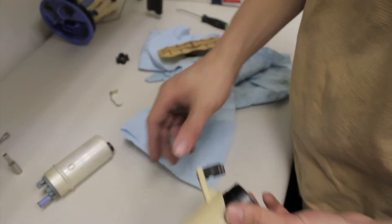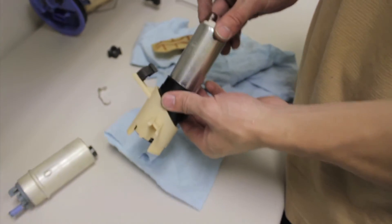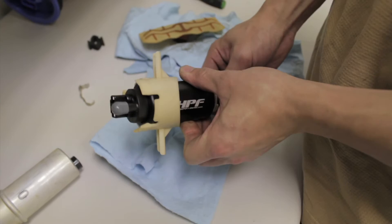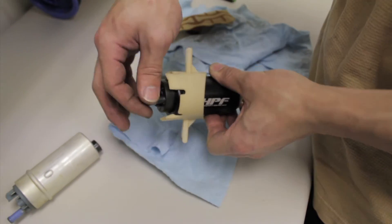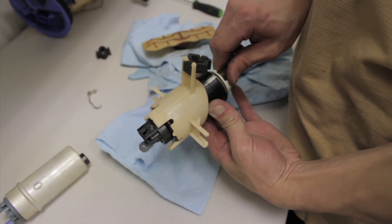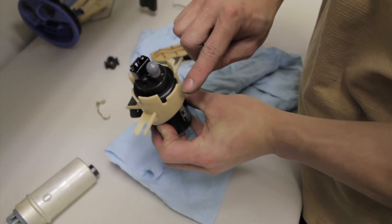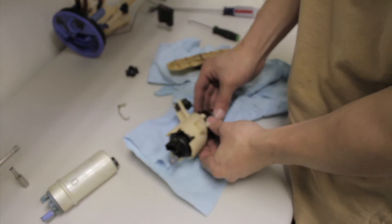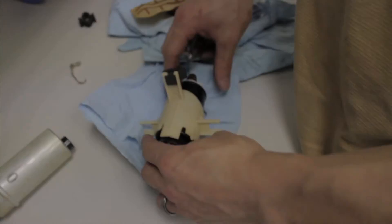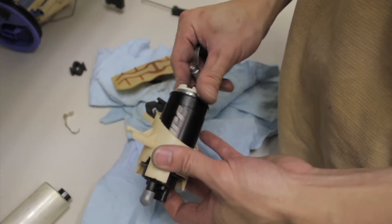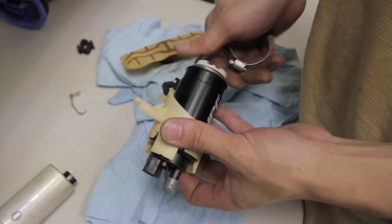What we'll want to do next is take our Walbro pump, slide it inside the sleeve. Just like that. Now, remember the orientation. The offset outlet has to be on this side. So now what we'll do is we'll clamp the pump into the end of the hanger. You can see it spins freely.